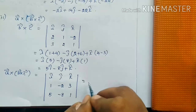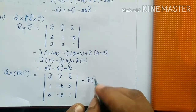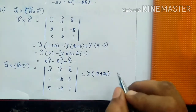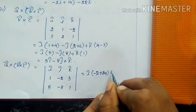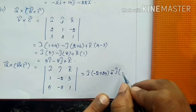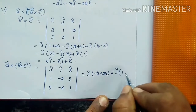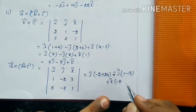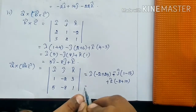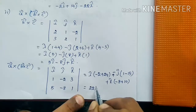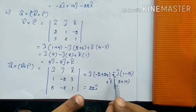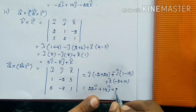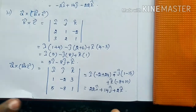Expanding: î into (-2 - (-24)) = î(22), minus ĵ into (1 - 15) = minus ĵ(-14), plus k̂ into (-8 + 10) = k̂(2). So we can write 22î + 14ĵ + 2k̂. This is the answer for the second subdivision.